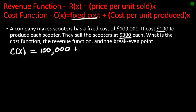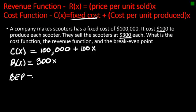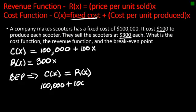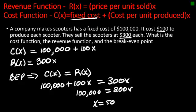The revenue function is the price per unit sold, which is $300, times x. The breakeven point occurs when the cost equals the revenue. So we have $100,000 plus $100x equals $300x. I have $100,000 equals $200x, so x is $500. This is our breakeven point.